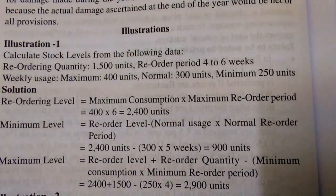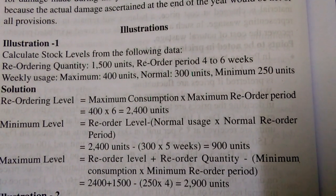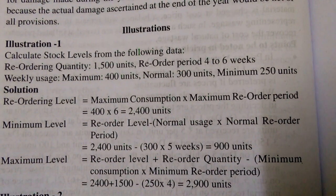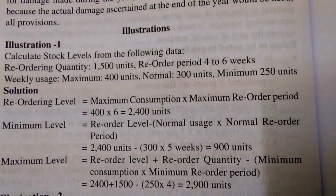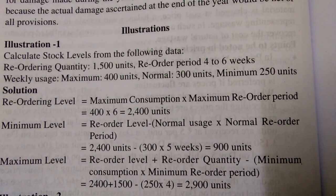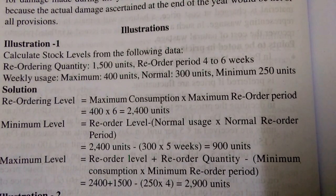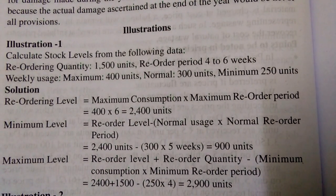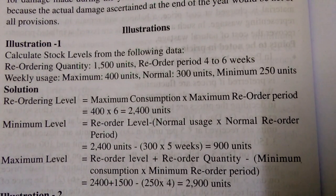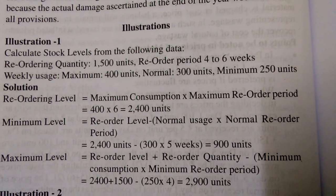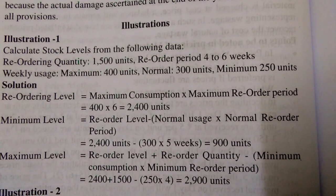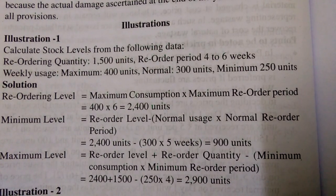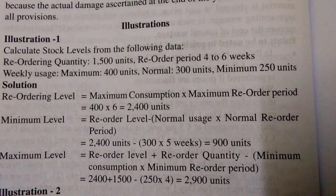400 into 6 equals 2400 units. Minimum level equals reorder level minus normal usage into normal reorder period. So reorder level 2400 units minus normal usage 300 units, into normal reorder period.